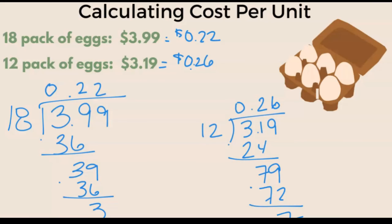By looking at this, you can see clearly that the 12-pack of eggs is more expensive than the 18-pack, even though the total dollars spent is more for the 18-pack. It just means that if you're going to eat eggs regularly and they don't expire, it's a better deal to buy the 18-pack versus the 12-pack.